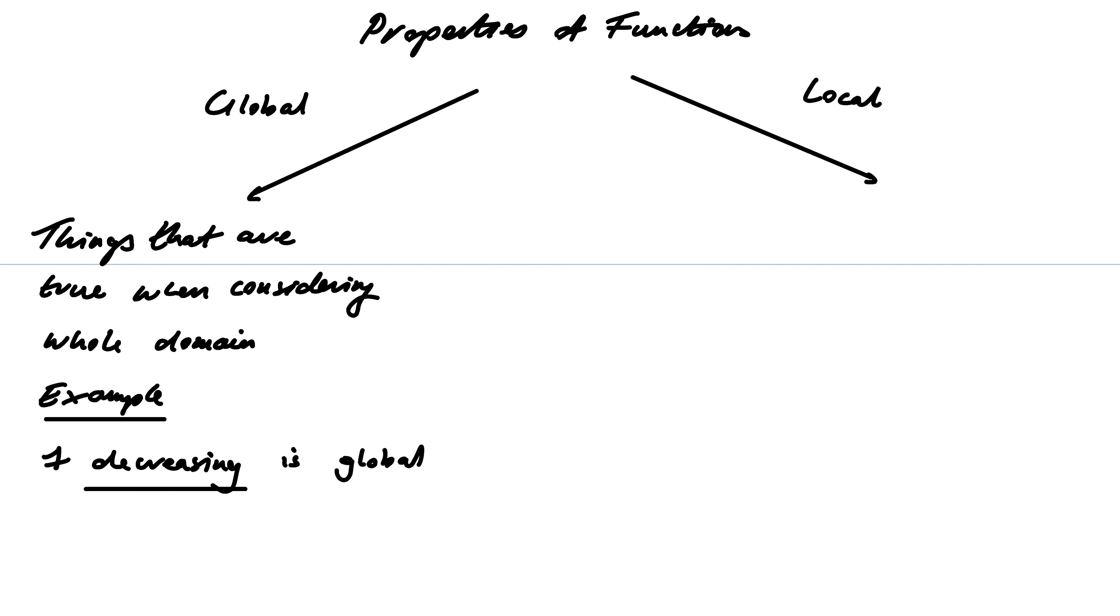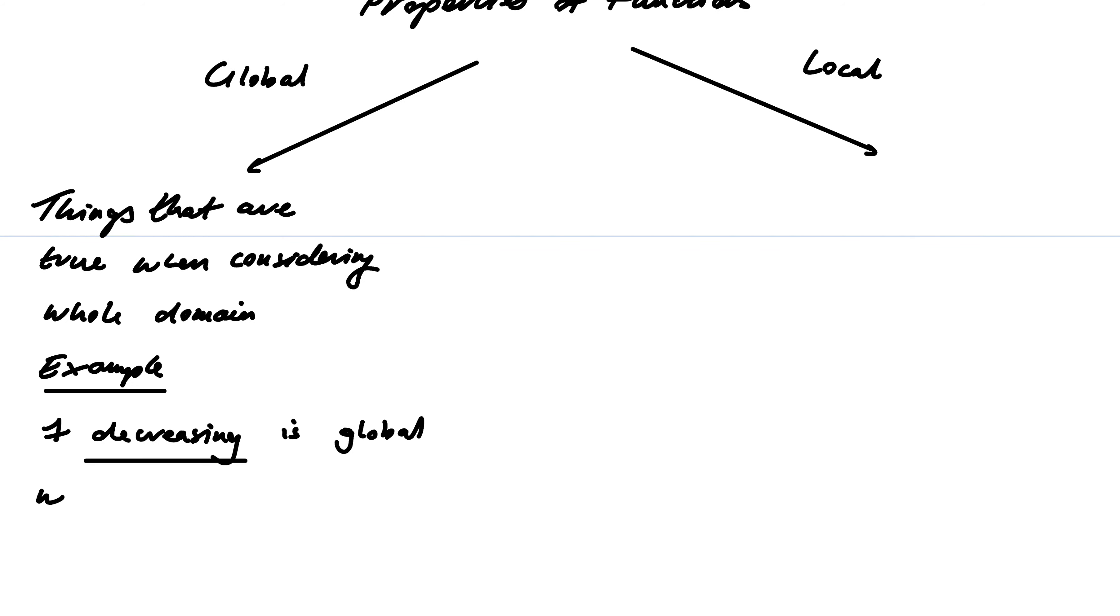Well, f decreasing is global because it relies on a and b from the whole domain. So we need a less than b implying... sorry, wrong way around. So we need this to be true for all a and b in domain.